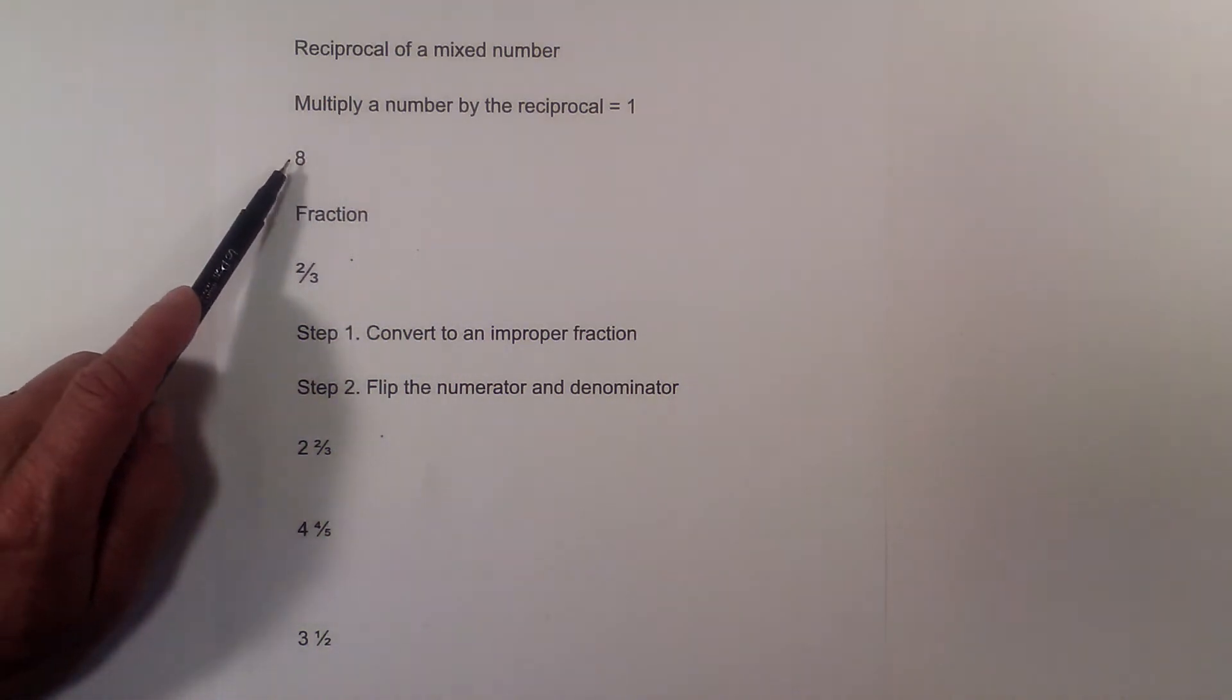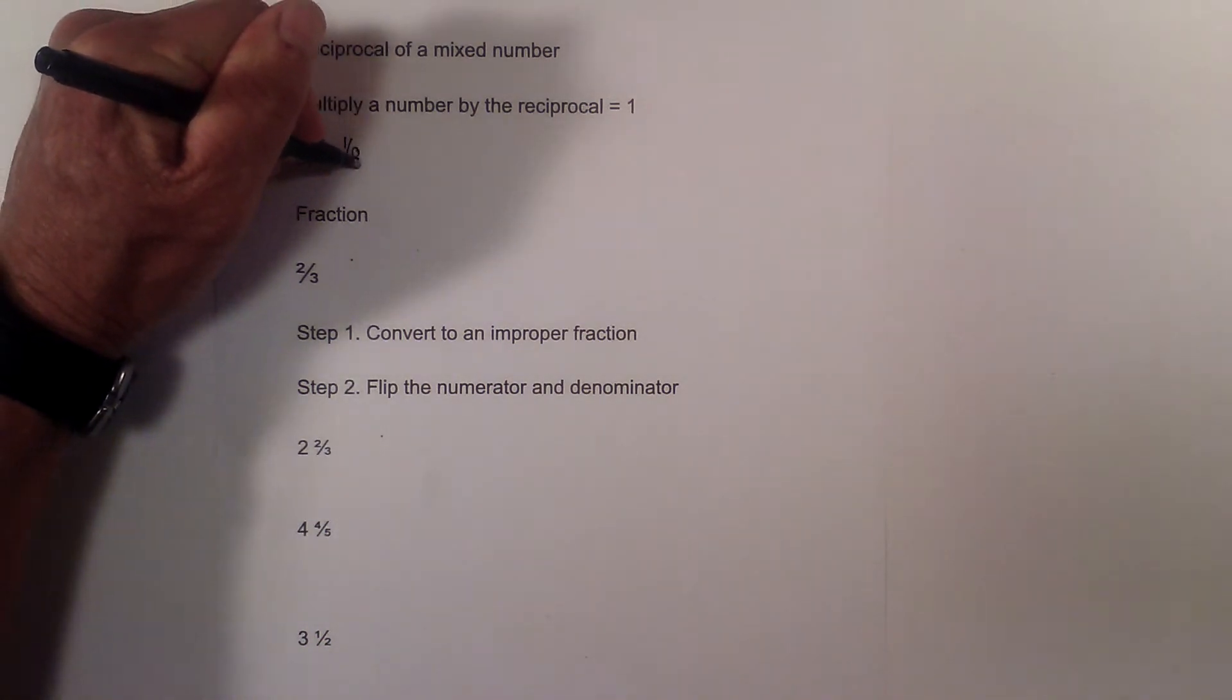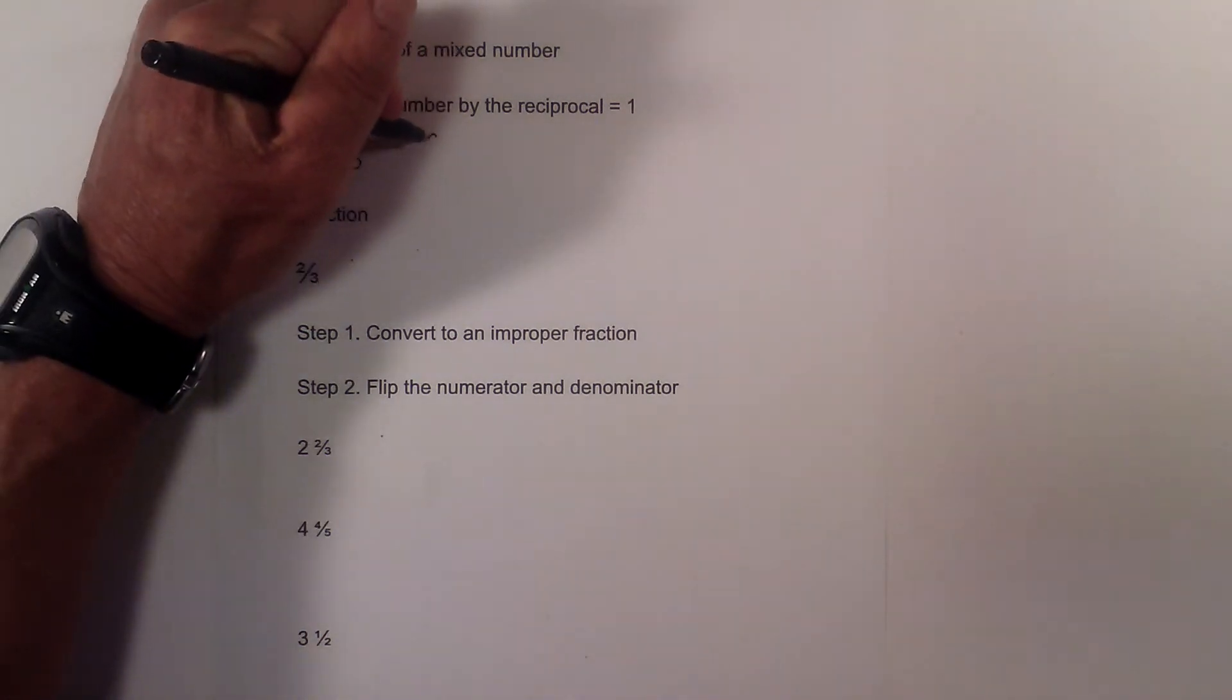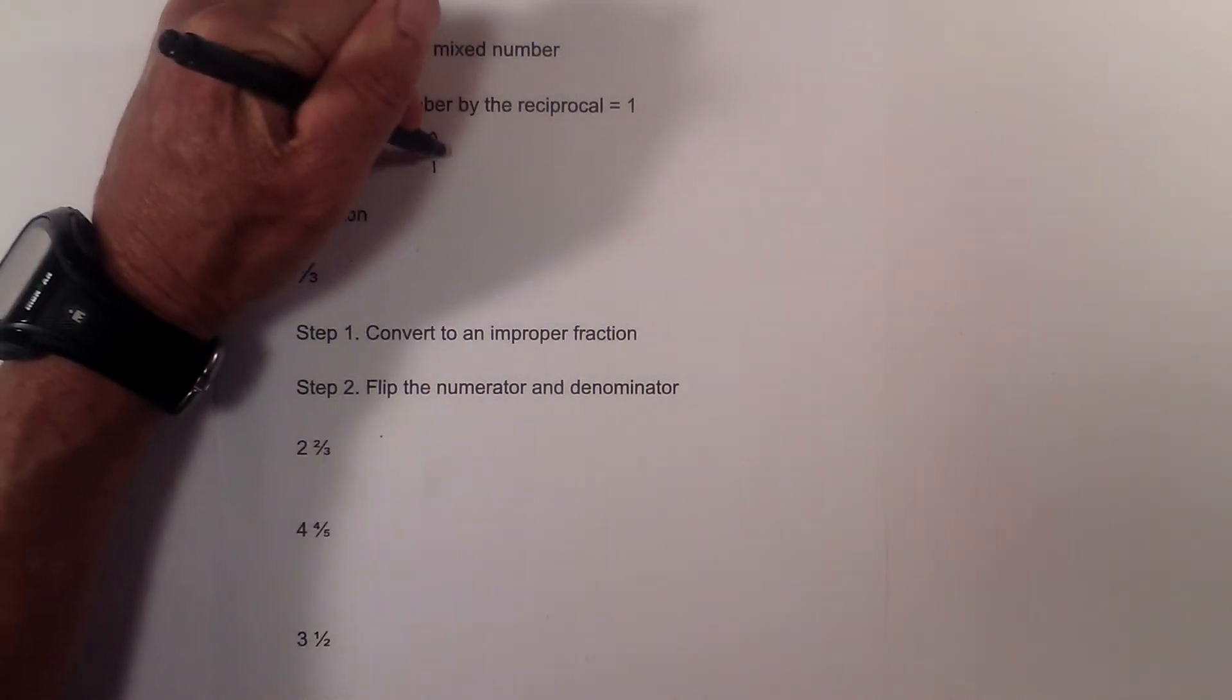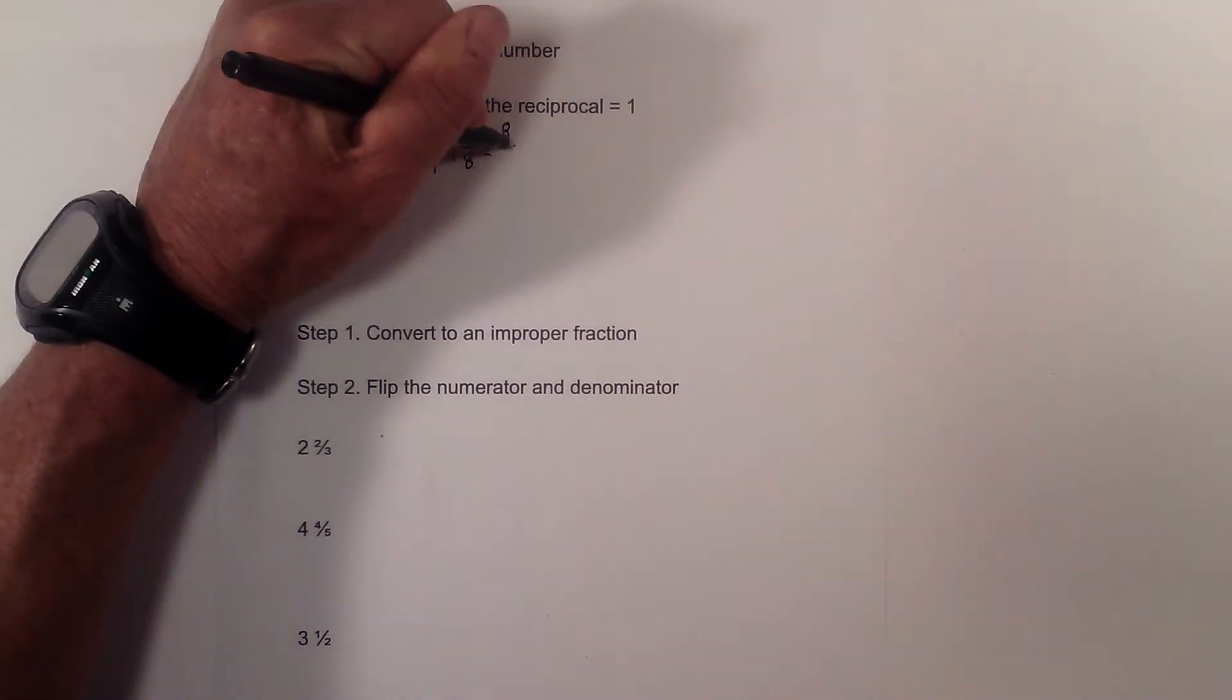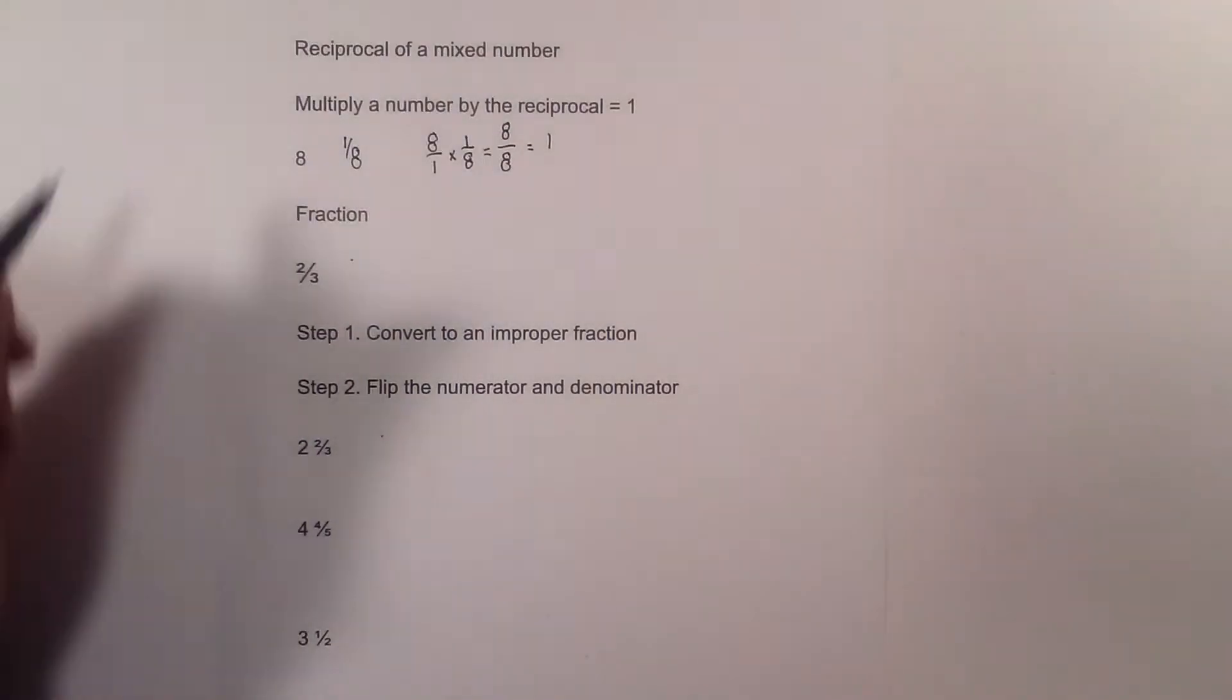If you have the number 8, the reciprocal is 1 over 8. And as you can tell, if you have 8 over 1 and multiply it by its reciprocal, it will always equal 1. So 8 divided by 8 is 1.